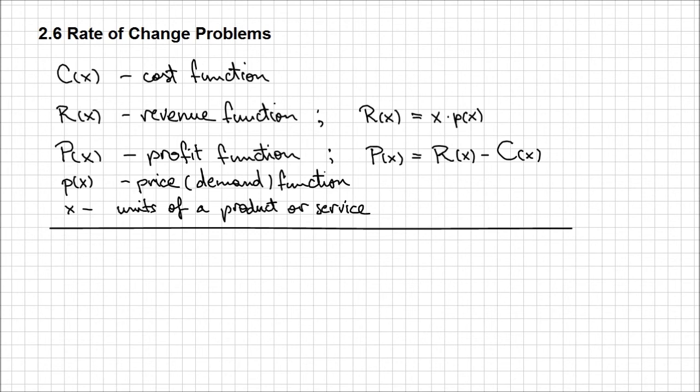Now there are three more concepts that we have to be familiar with. C prime of X or dC/dX. So this is the marginal cost. This word marginal refers to the instantaneous rate of change of this cost function with respect to the number of units sold.